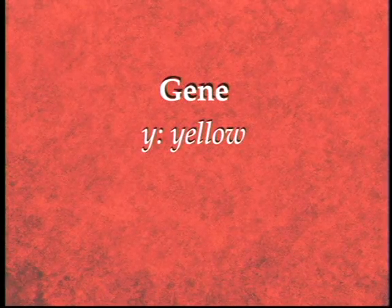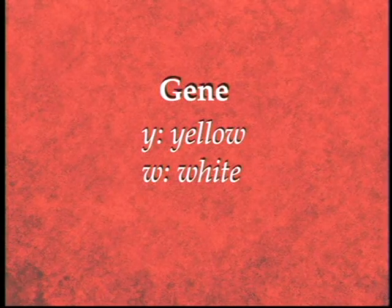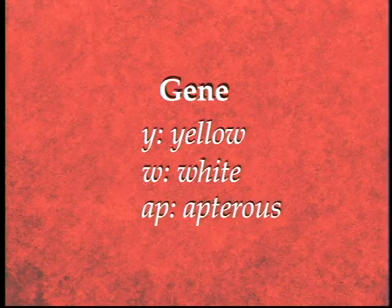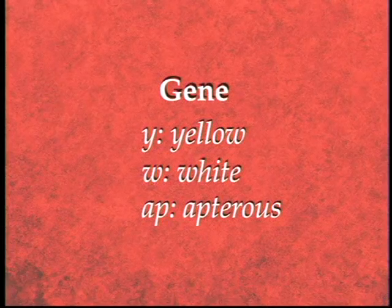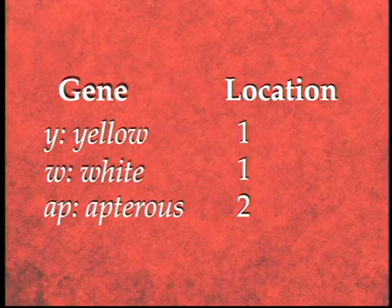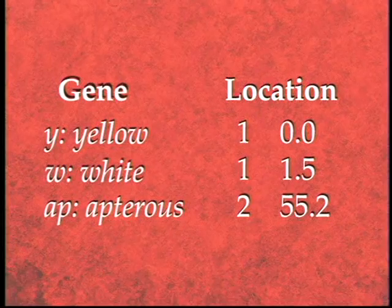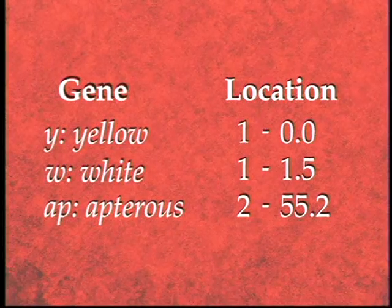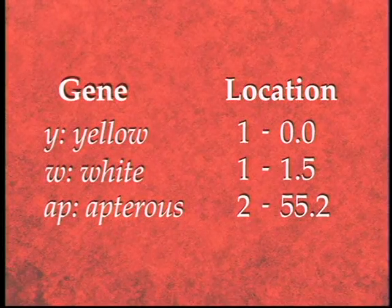The location of a MAP gene can be represented in numeric form, where the first number represents the chromosome it is on, and the second number, separated by a hyphen, represents its position on the chromosome.